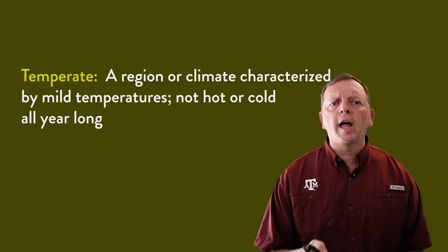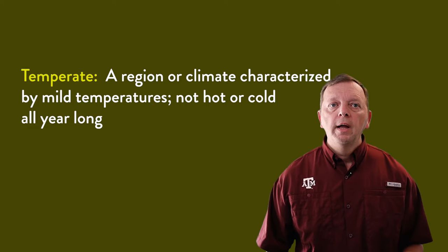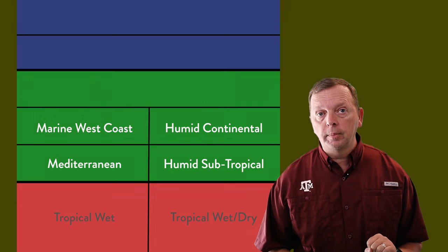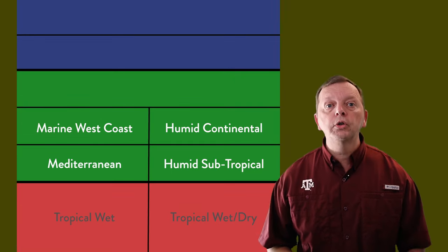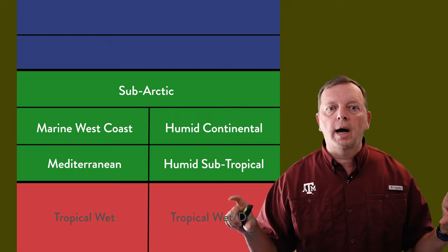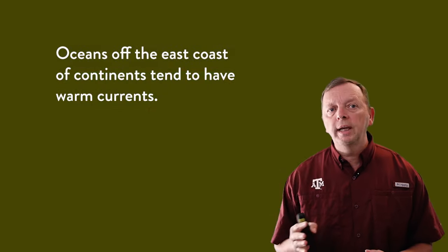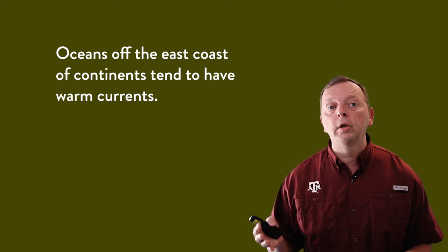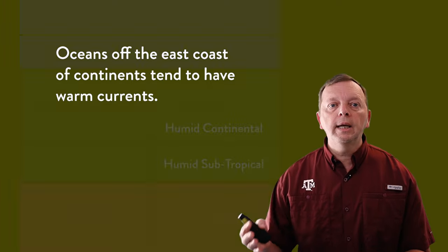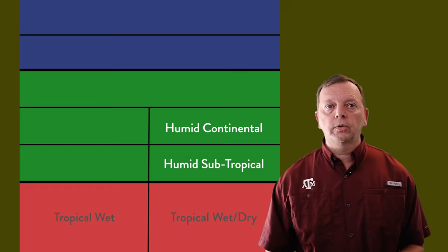Now we move into our middle or temperate latitudes. The term temperate means it has a mild climate where it is not very warm or very cold all year long. There are five climates in the temperate latitudes, with two on the west coast and two on the east coast, plus a fifth that stretches across a continent just short of the high latitudes. The warm ocean currents on the east coast of the continent create more humidity, which explains why we have humid subtropical and humid continental climates there.